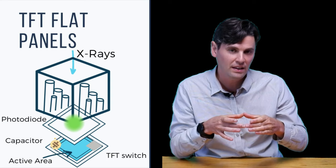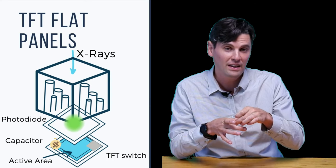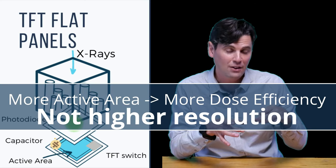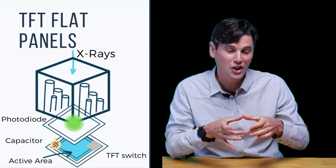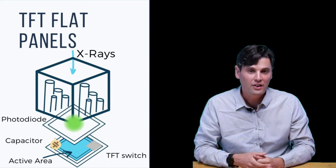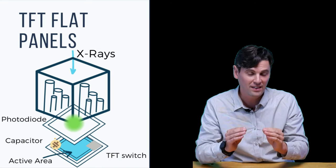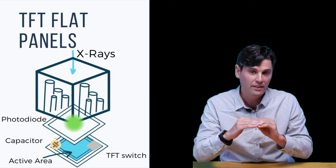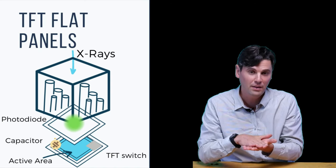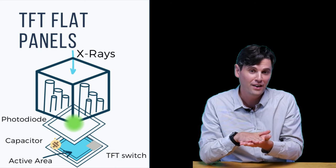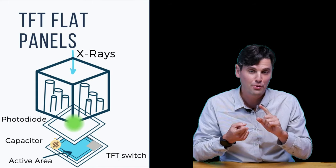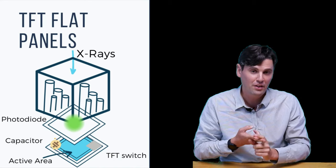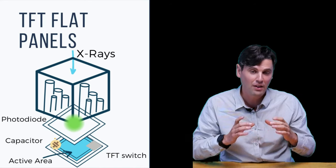Within each detector element of the TFT array there is an active area, a capacitor to store the charge, and a gate or switch to address and read out the stored charge. Light from the scintillator is measured in the photodiode, the photodiode converts it to an electrical signal measured in the active area of the TFT array, and when readout is triggered there is an amplification process followed by analog-to-digital conversion to produce a digital signal for each detector element.